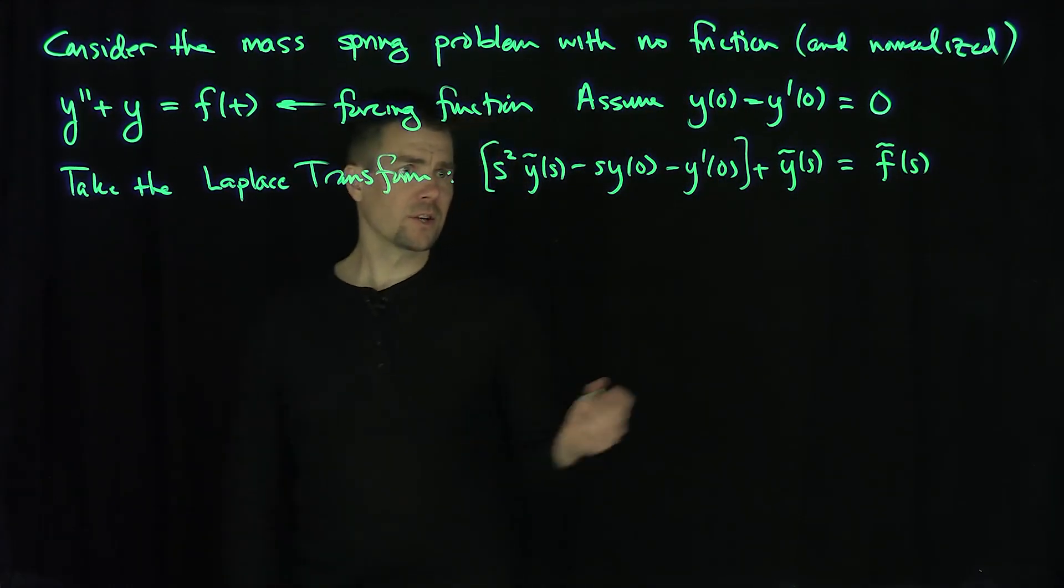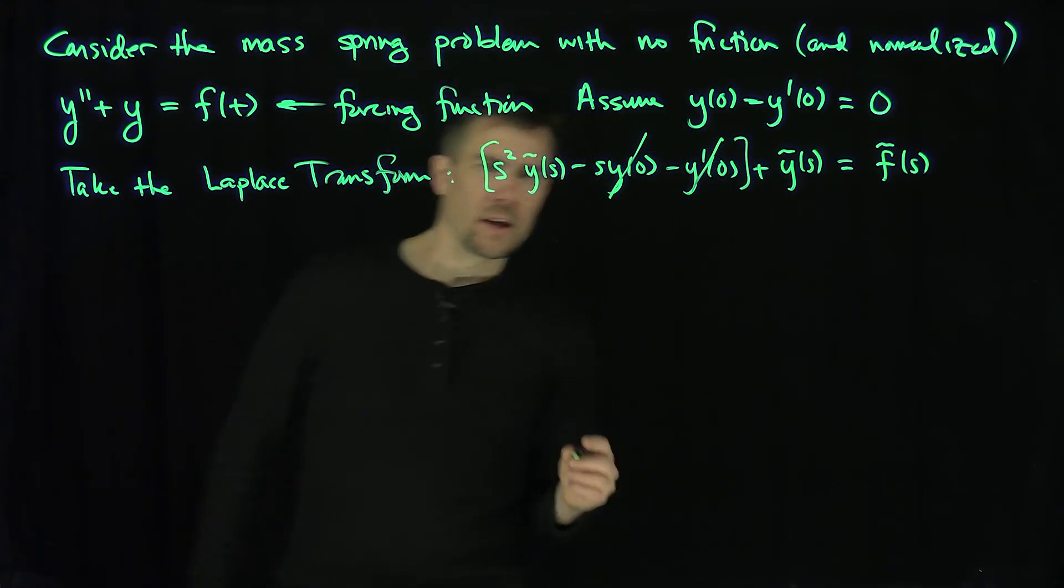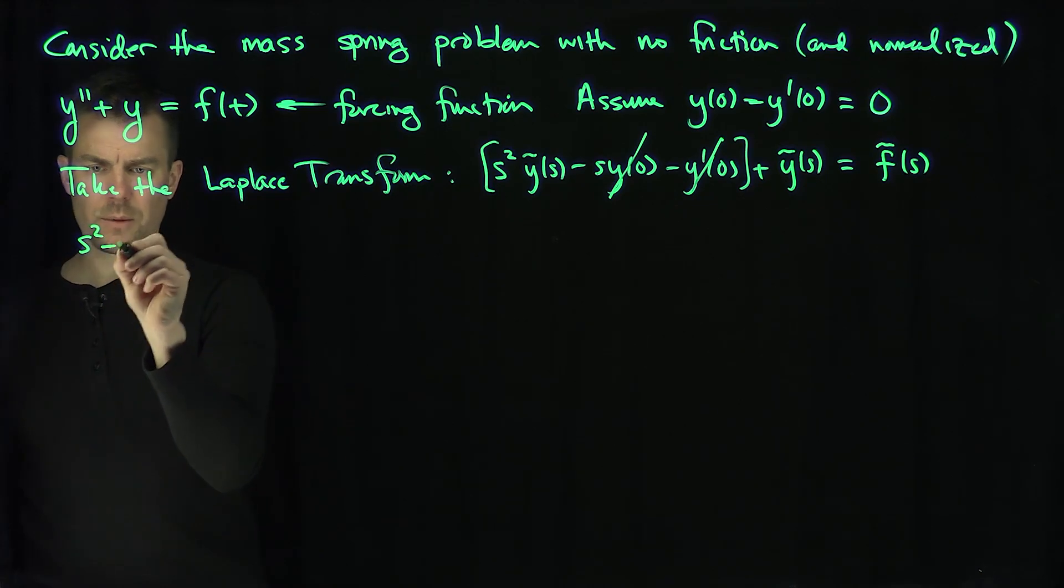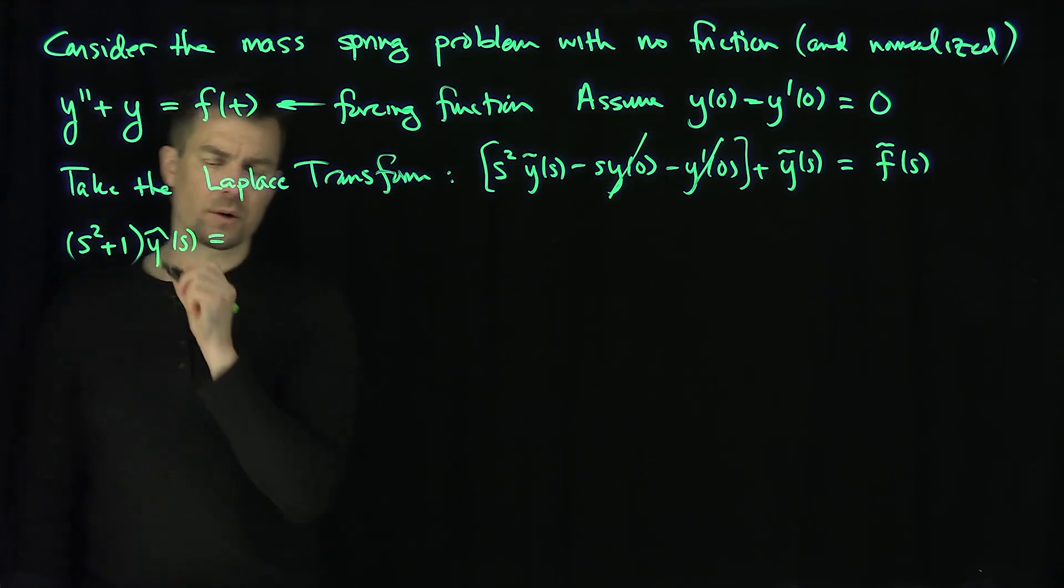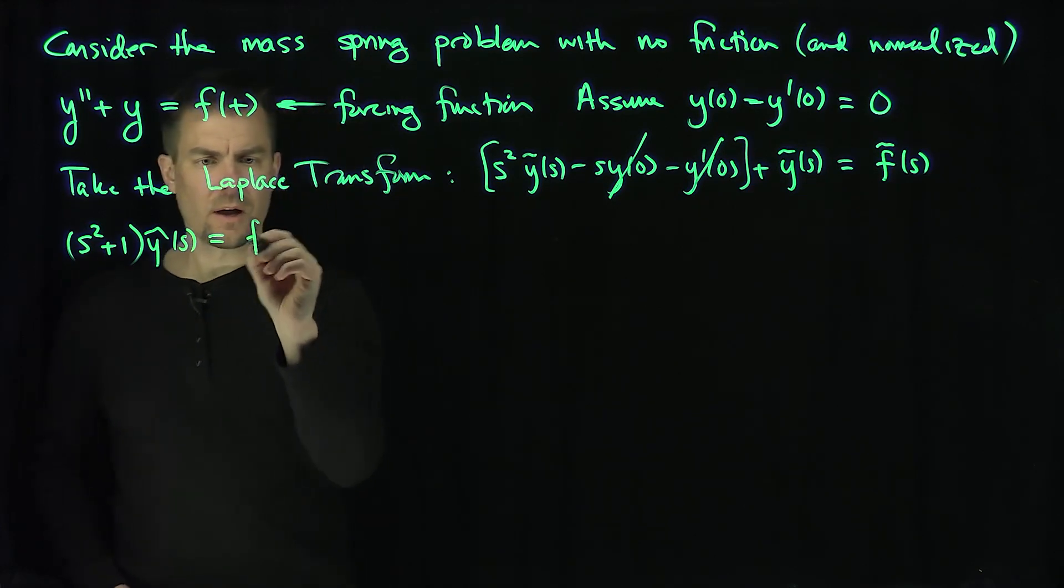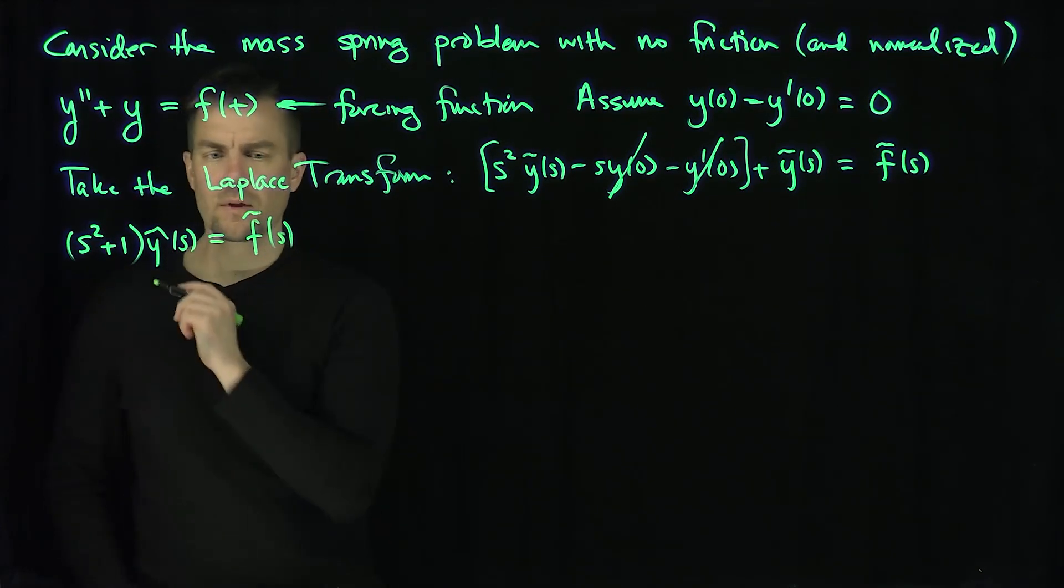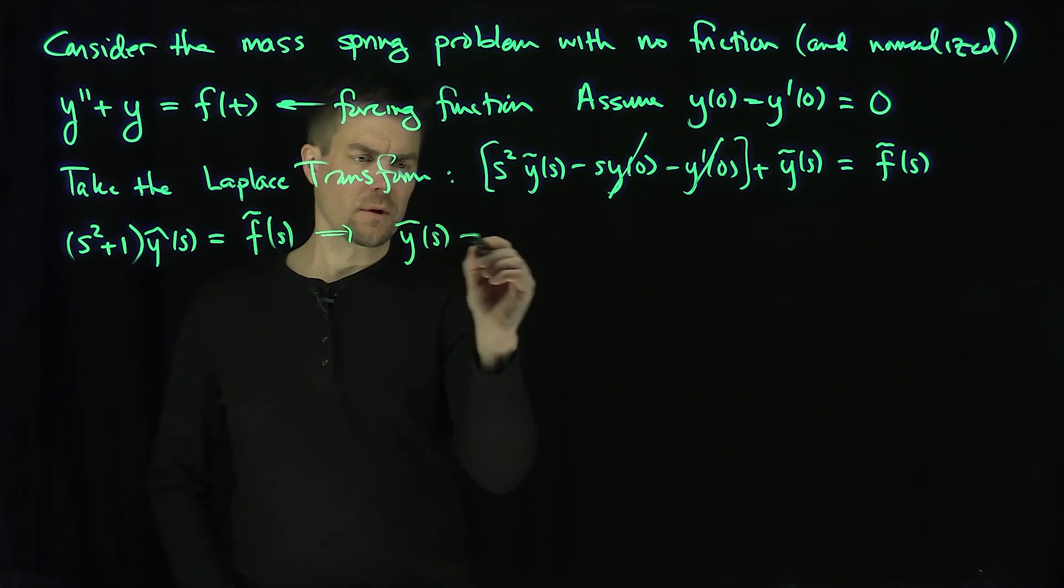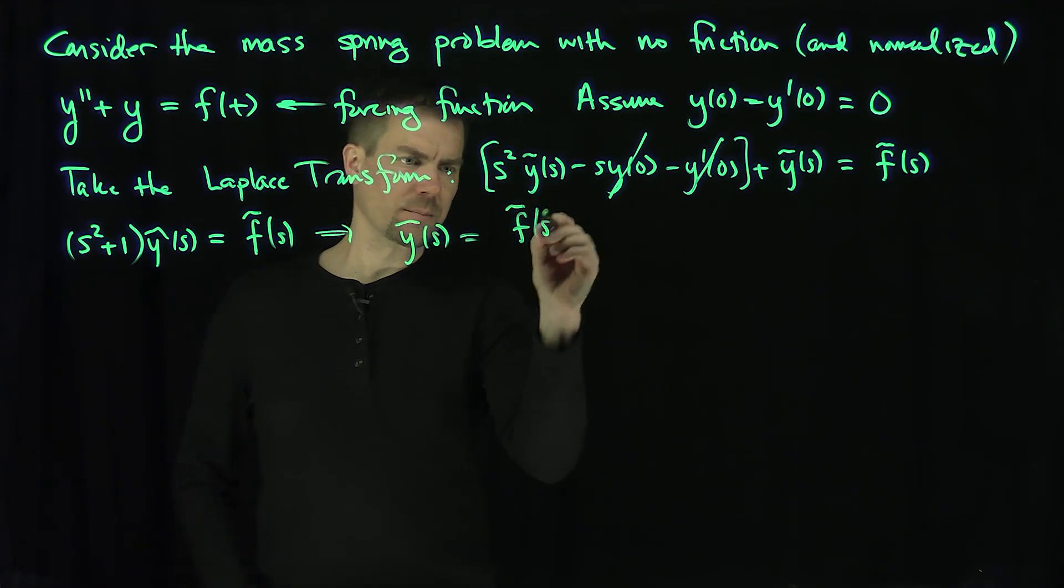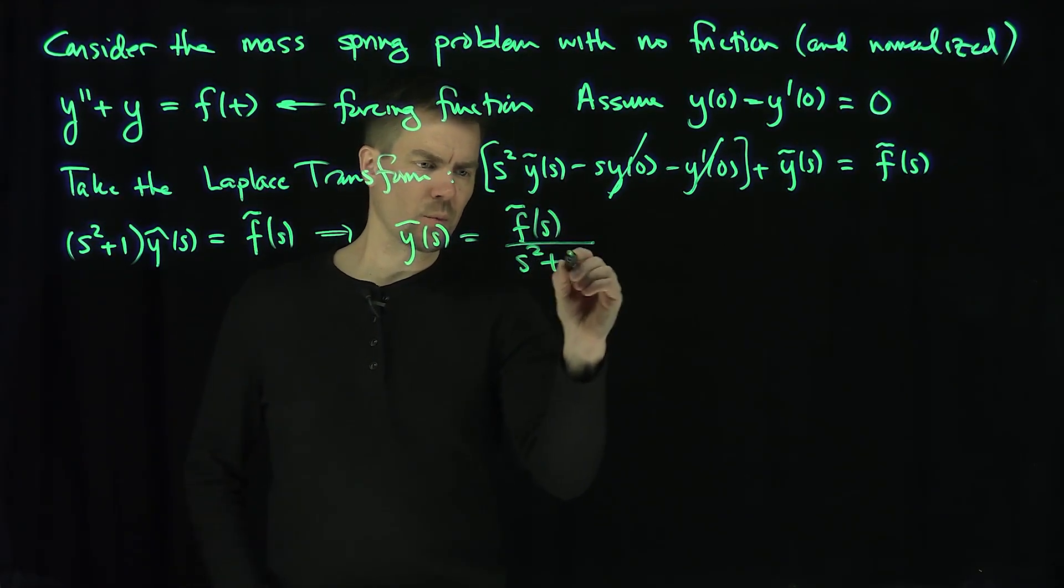Now what this tells me, these boundary terms are gone, and so this just tells me that s squared plus 1 y tilde of s is equal to f tilde of s. And therefore, this tells me that y tilde of s is equal to f tilde of s over s squared plus 1. And now I have a product of two functions.